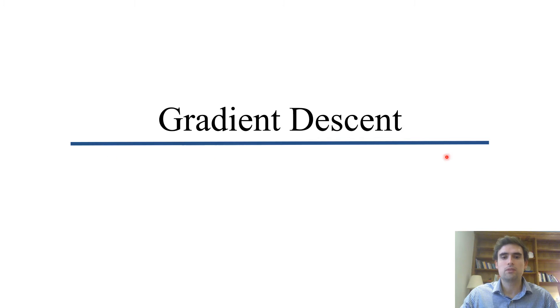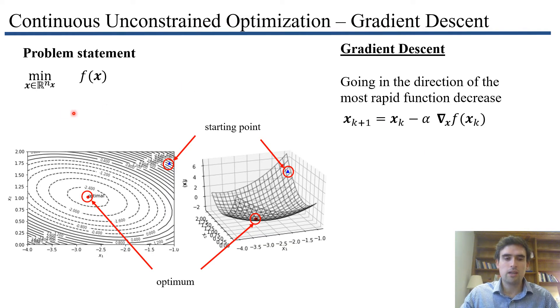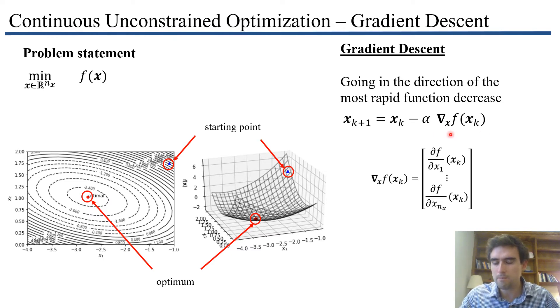Now we'll discuss gradient descent. The problem statement, as mentioned: our algorithms have an iterative scheme where we start at this point and take steps all the way to the optimal. These steps take the form of a step size and a direction. This is my gradient.